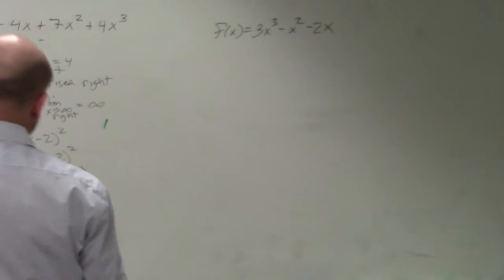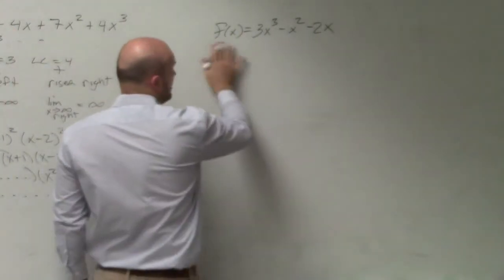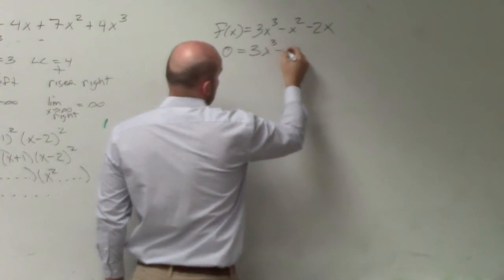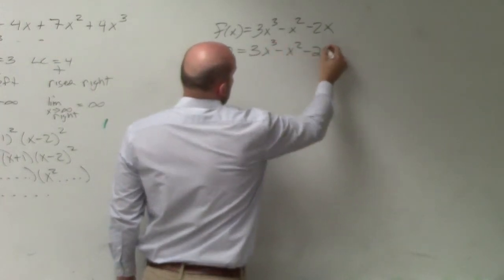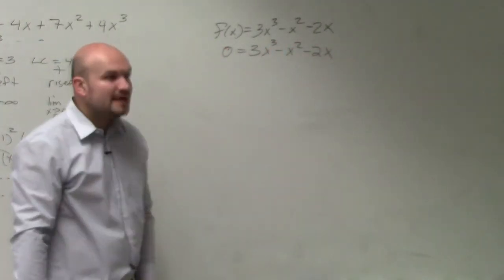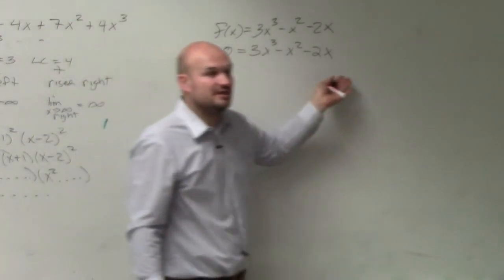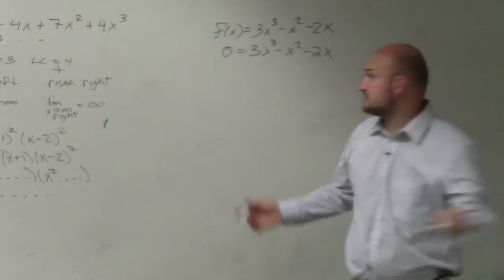What you need to do here is, just like we did in our first focus lesson, replace f of x with 0. Now, always look to factor out a GCF. Do they have a common factor that we could factor out? Yes, they have an x.